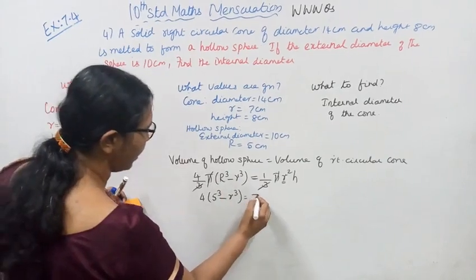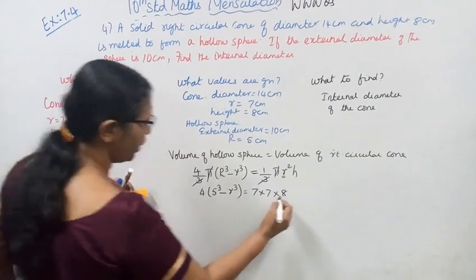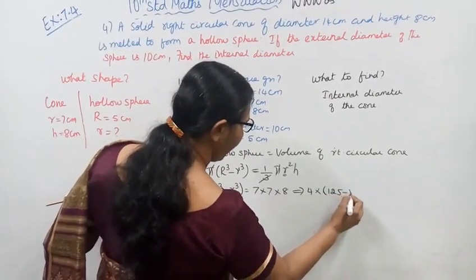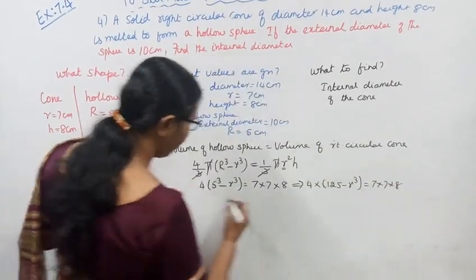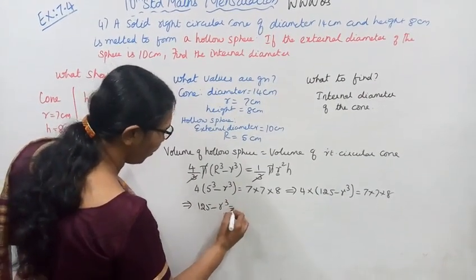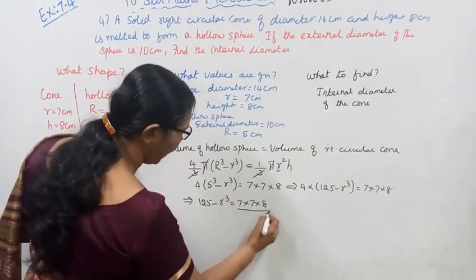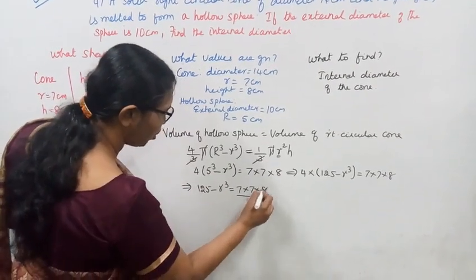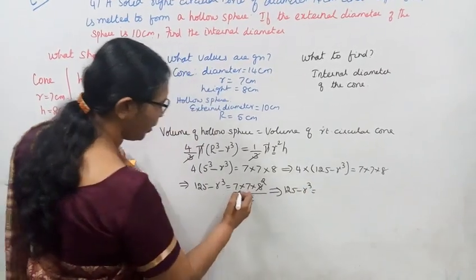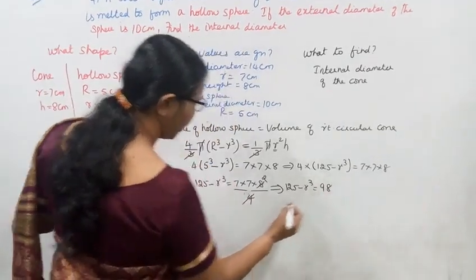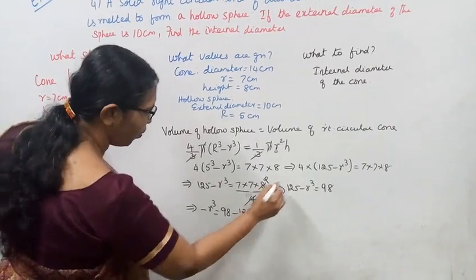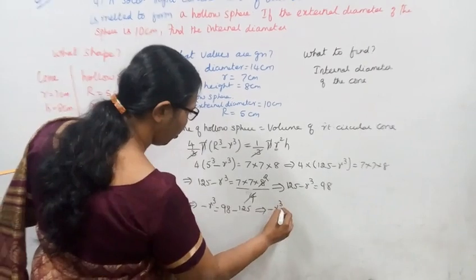Substituting: r³ = 7 × 7 × 7 × 8 divided by 4. That implies 4 × (5³ − r³) = 7 × 7 × 8. So 4 × (125 − r³) = 7 × 7 × 8. That implies 125 − r³ = 98 divided by 4 = 98. So 125 − r³ equals 98, giving minus r³ = 98 − 125.